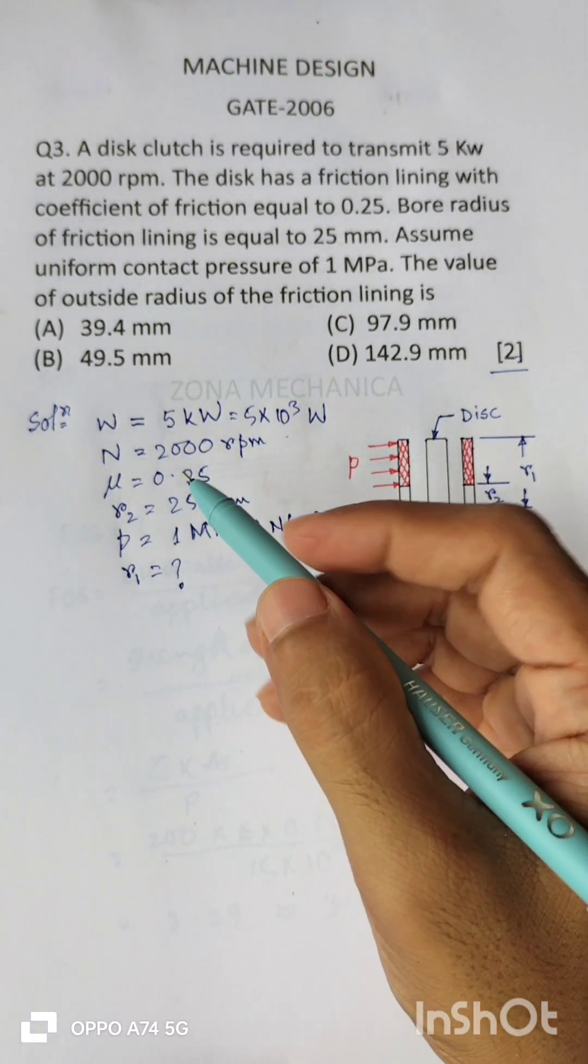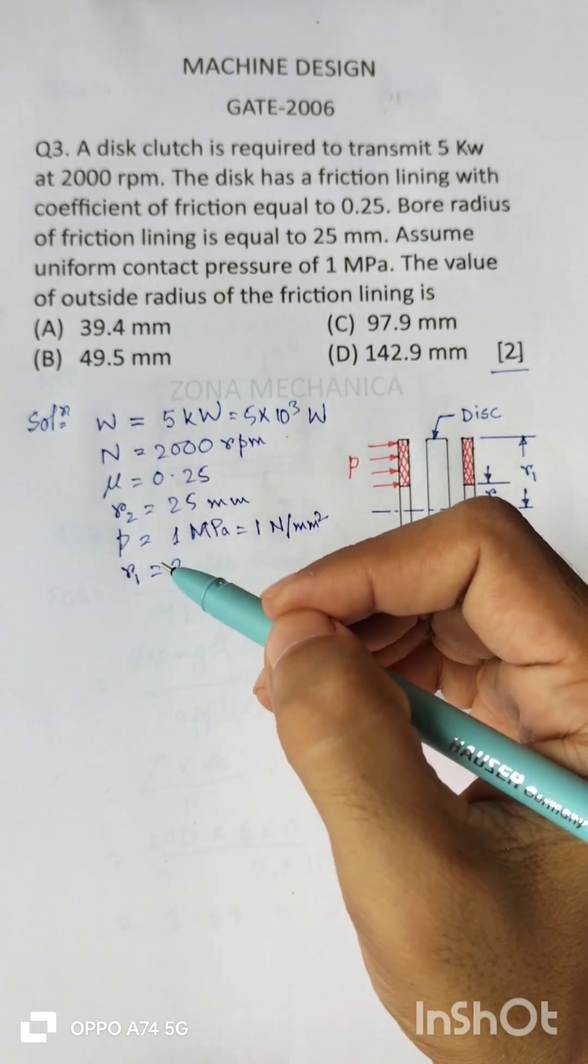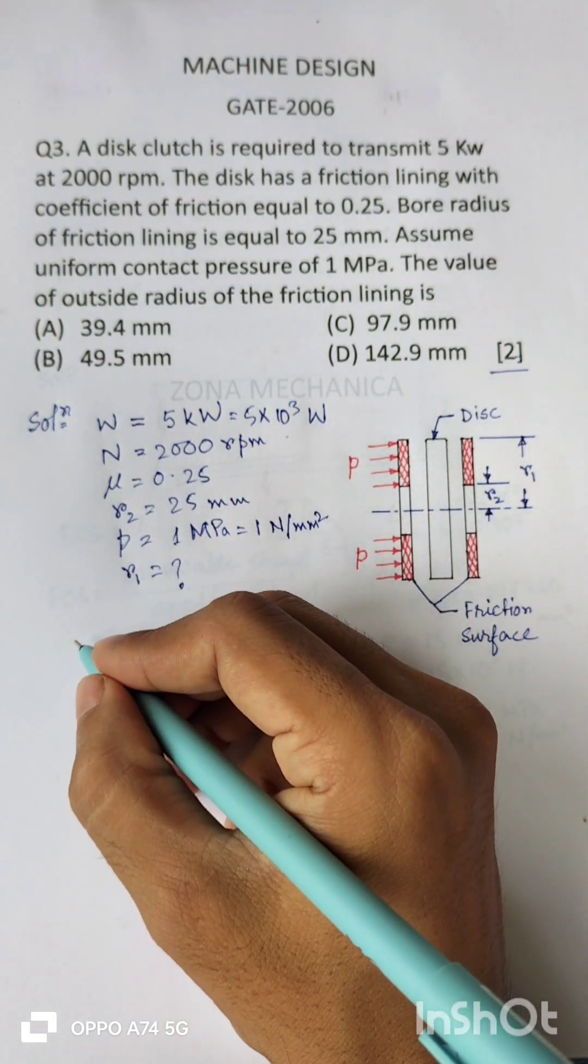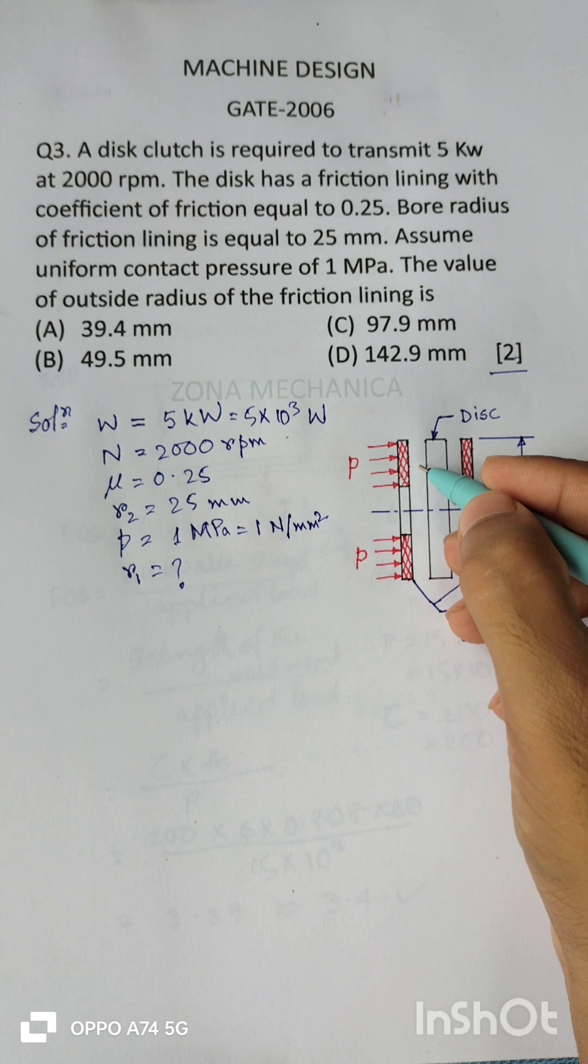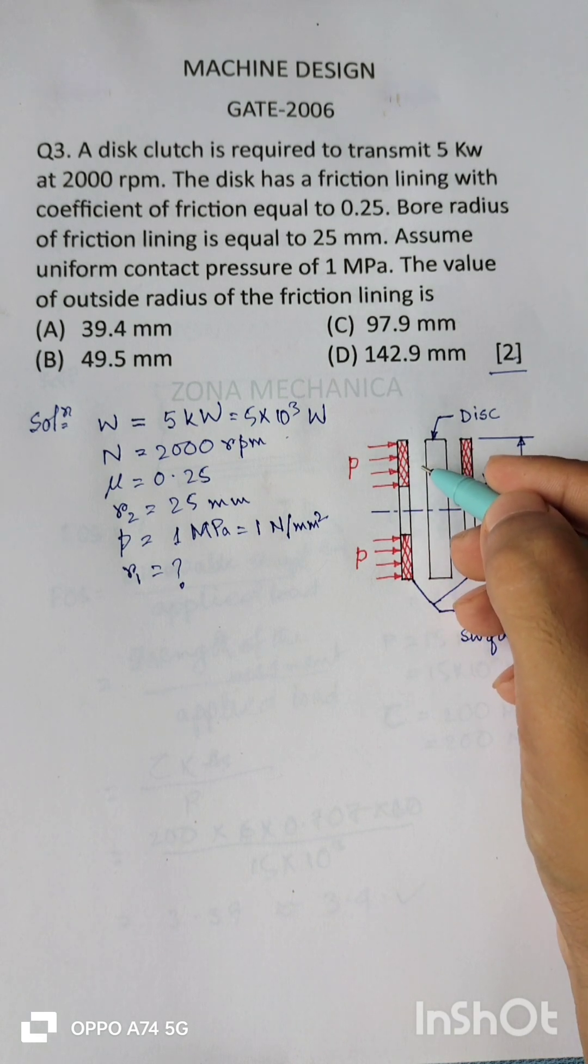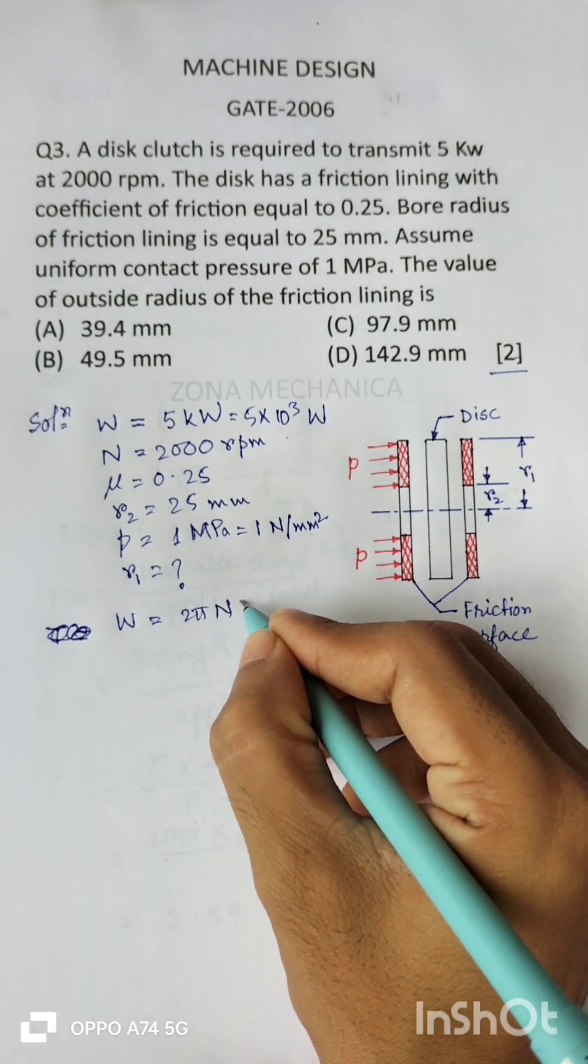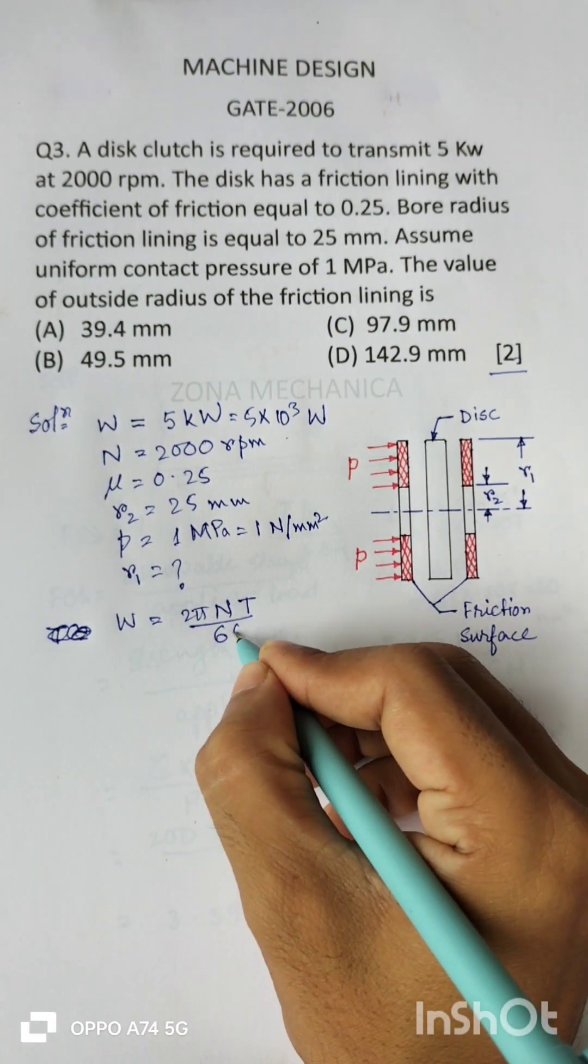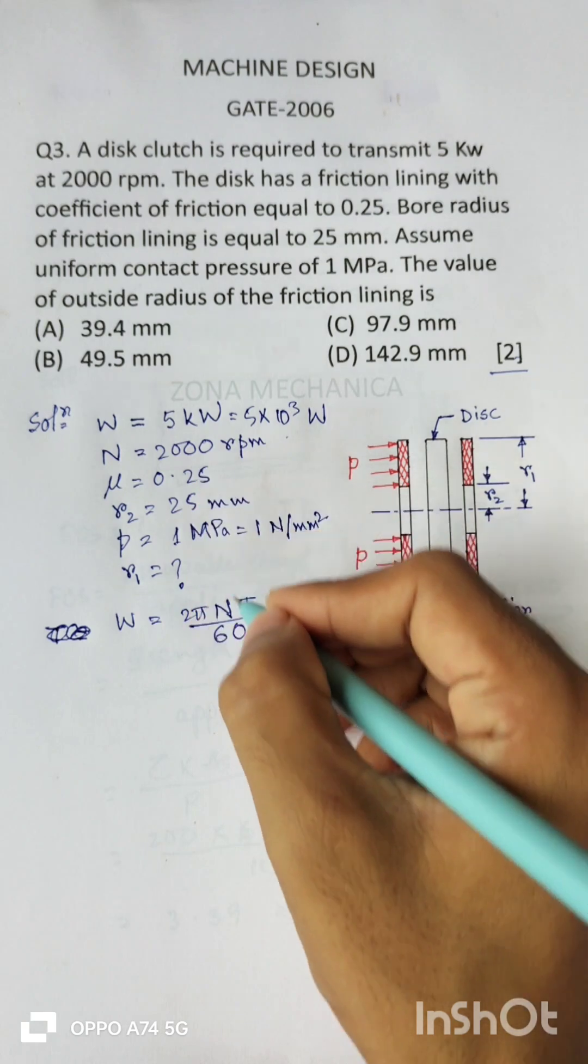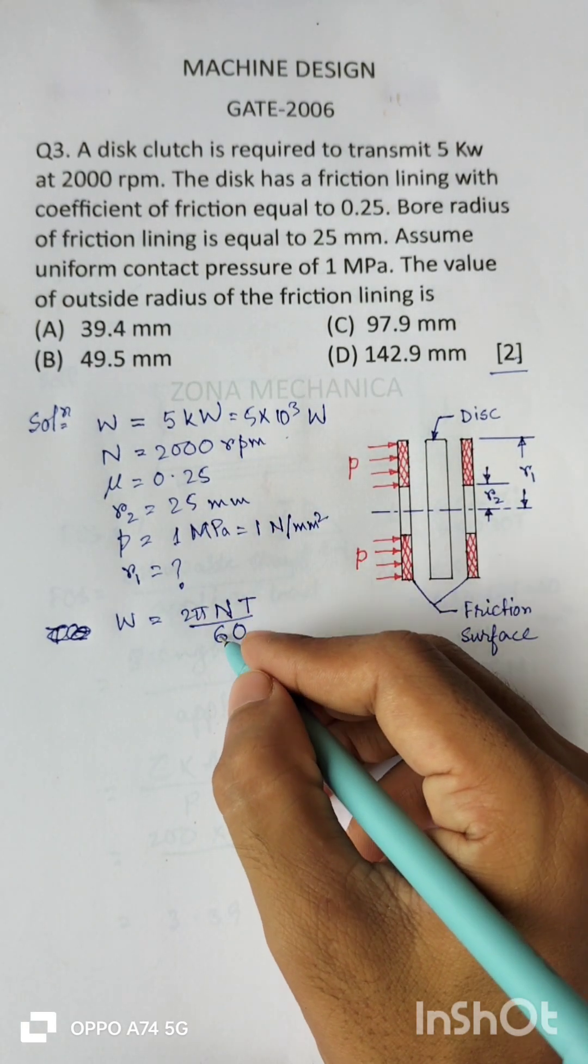From the load given and the RPM given, we can calculate the torque associated or torque developed in the clutch. W is equal to 2πnT by 60. Since n is in RPM, that is revolution per minute, we are taking revolution per second, so by 60.